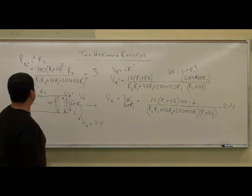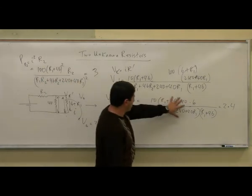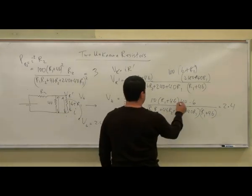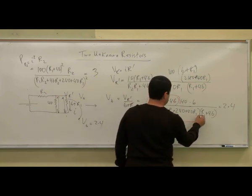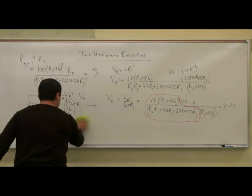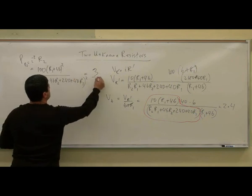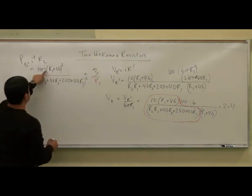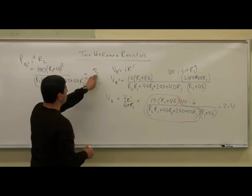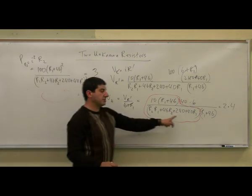Looking at the first condition, we have 100(R1 + 46)² over that denominator squared, times R2 equals 3. Notice that the expression circled in the second condition is actually the square root of what appears in the first condition's denominator. So moving R2 to the other side and taking the square root, we get the square root of (3 over R2) equals 10(R1 + 46) over the denominator, which links the two conditions.